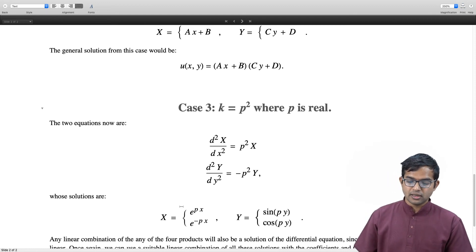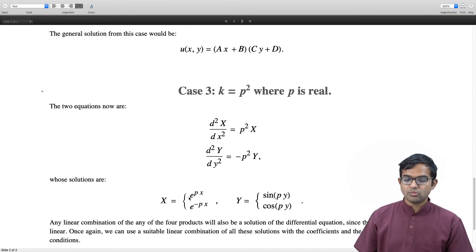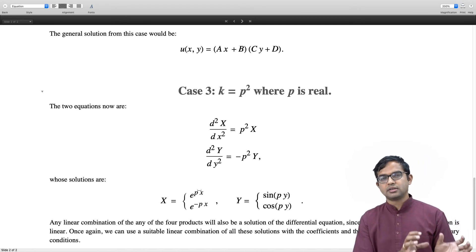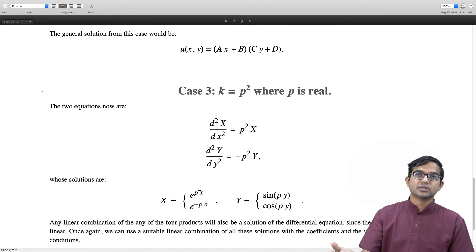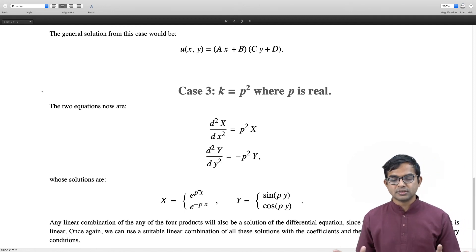In general, any linear combination of all these four possibilities—in case 3 and case 1—the solution would be e^(px)sin(py) plus some constant times e^(px)cos(py) plus some other constant times e^(-px)sin(py) plus another constant times e^(-px)cos(py). All four combinations are legitimate solutions, and the value of p itself can be changed.